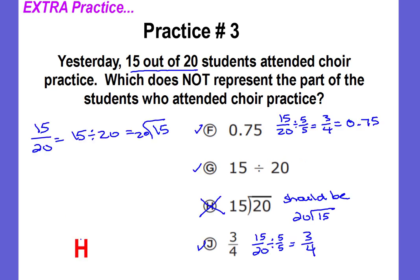The correct answer is H. And when I say correct answer, I mean this is the one that does not represent 15 out of 20. All of the other answer choices do represent 15 out of 20. If you got the correct answer, great job, you're done. If you got it wrong, go ahead and pause the video, take a look at the work, see if you can find out where your mistake is. Good job, Bobcats.